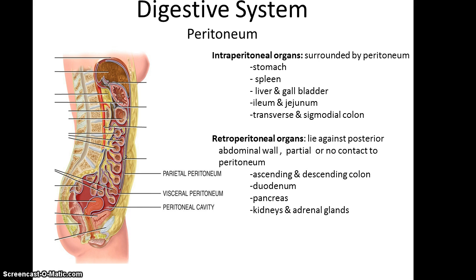Some retroperitoneal organs lie against the posterior abdominal wall with little to no contact with the peritoneum. These include the ascending and descending colon of the large intestine, the duodenum of the small intestine, the pancreas, and the kidneys and adrenal glands.